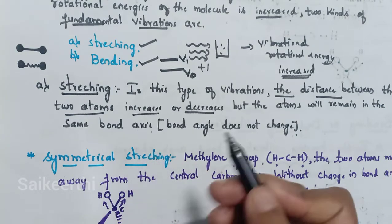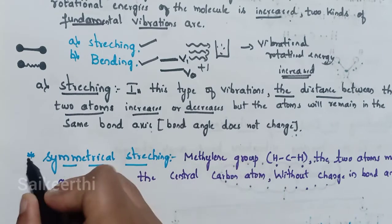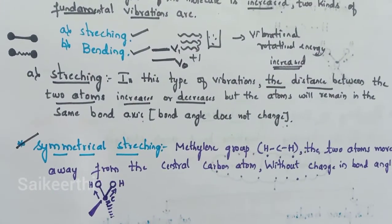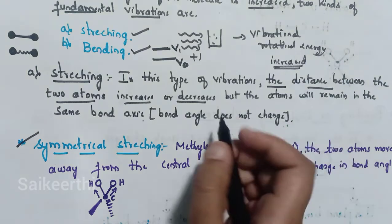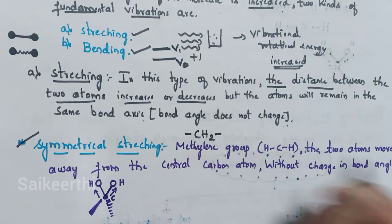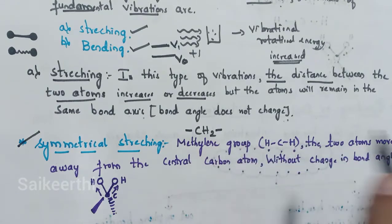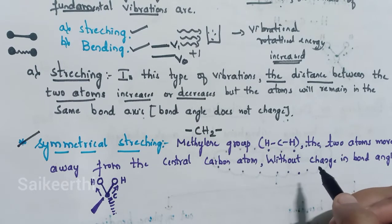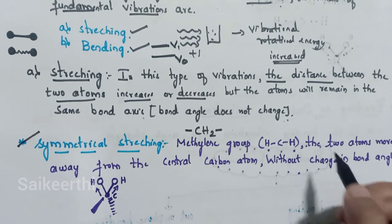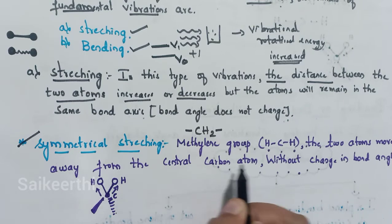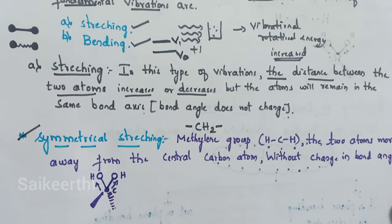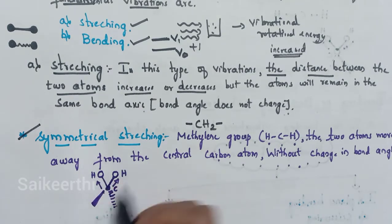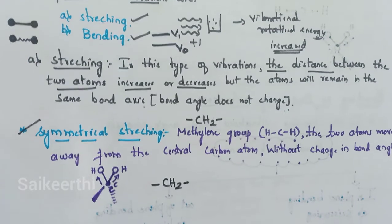Let's understand symmetrical stretching using the CH2 (methylene) group as an example. In symmetrical stretching, the two hydrogen atoms move away from the central carbon atom without any change in bond angle. Since in stretching the bond angle does not change, only the bond length changes.